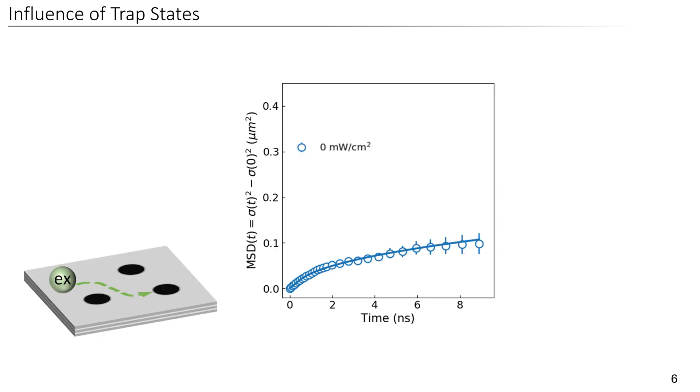One of the origins of sub-diffusion is the presence of trap states that slow down excitons as they get trapped over time. For perovskites, it has been suggested that these traps can be filled under illumination. The picture suggests that excitons generated from the background illumination are able to fill the traps, allowing other excitons to diffuse more readily throughout the material.